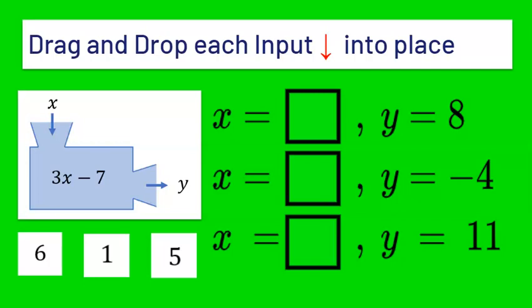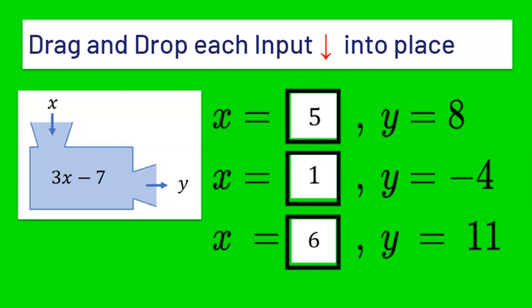Let's try in reverse. These are your outputs: 8, negative 4, and 11. Can you figure out the input? Pause the video and try these yourself. For y equals 8, add 7 to get 15, then divide by 3 to get 5. If the output is negative 4, add 7 to get 3, then divide by 3 to get 1. If your output is 11, add 7 to get 18, then divide by 3 to get 6.